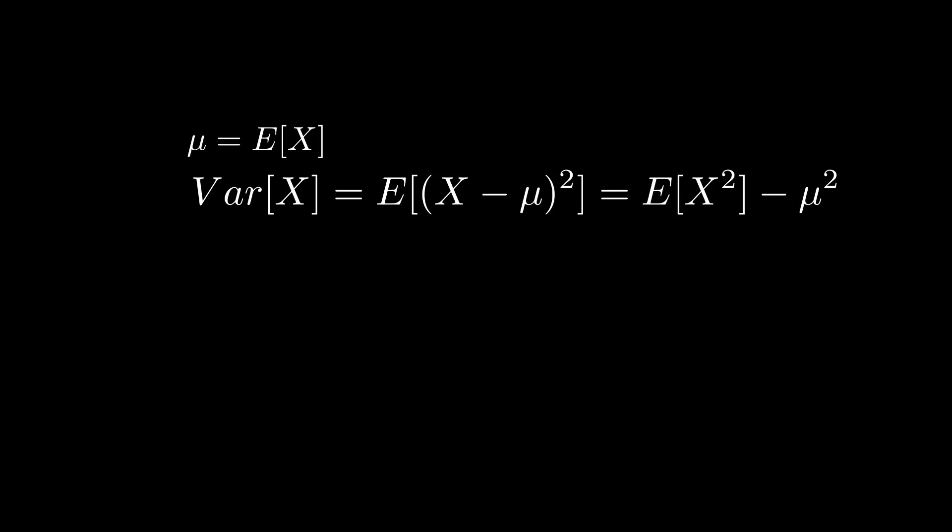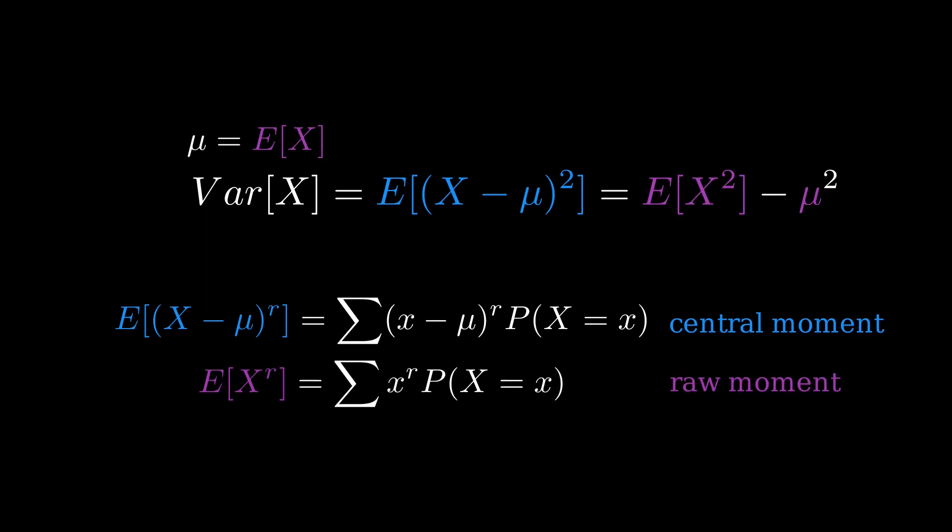More generally, a probability distribution has central moments where the random variable is shifted to the mean, e of x minus mu to the r, and raw moments, e of x to the r, where it's not shifted. If you know all the central moments, you can calculate the raw moments, or vice versa. I'll leave that as an exercise to you to figure out.